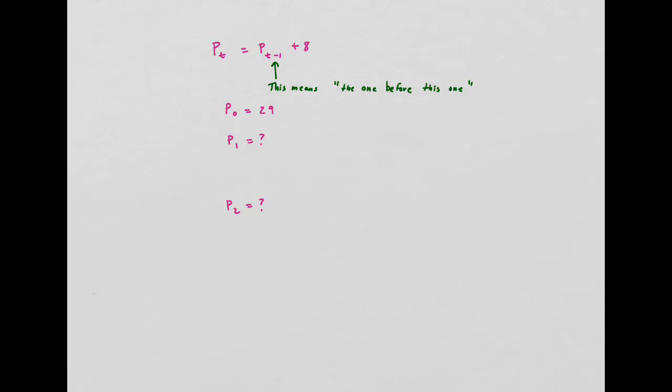So if I know that p0 is 29, what's p1 and what's p2?